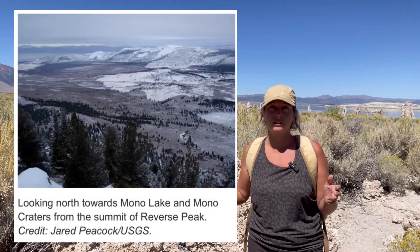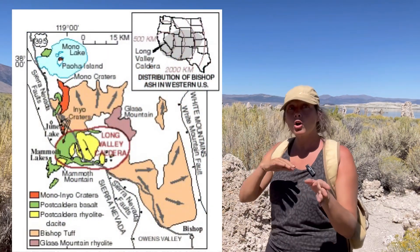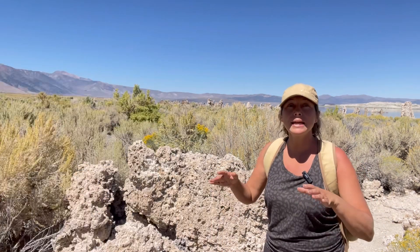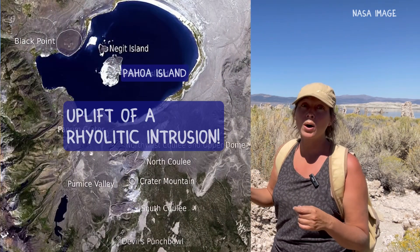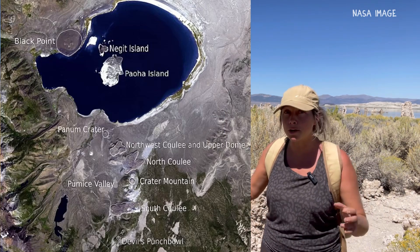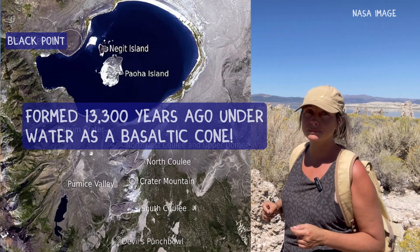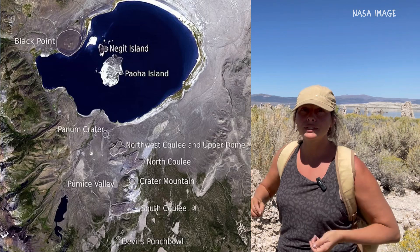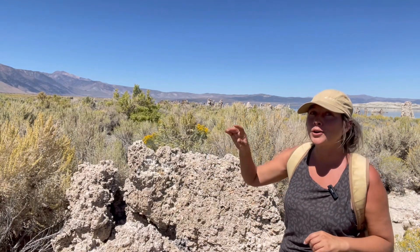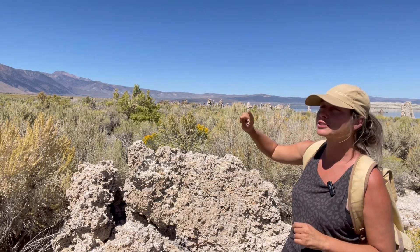The nearby Mono Craters volcanic field consists of vents in Mono Lake and on its north shore. The most recent activity in the Long Valley to Mono Lake region took place only about 300 years ago, when lake bottom sediments forming much of Paoha Island were uplifted by a rhyolitic intrusion. The most prominent feature of the Mono volcanic field is Black Point, which rises above the northwest shore. Mono Lake lies at the northernmost end of the Mono-Inyo Craters volcanic field. Soon we'll talk a lot more about that Mono-Inyo Craters volcanic field and the Long Valley Caldera.